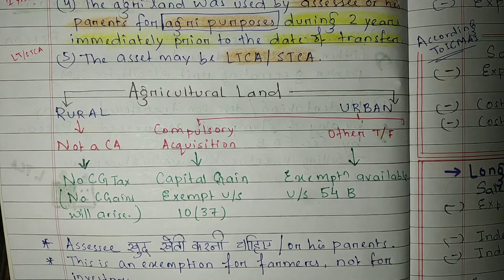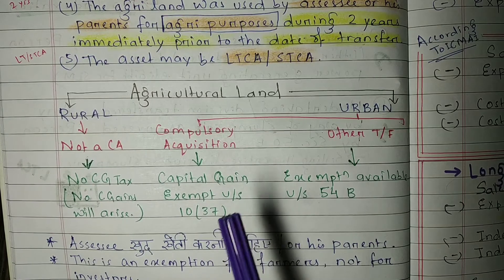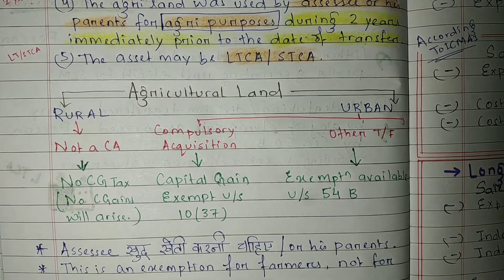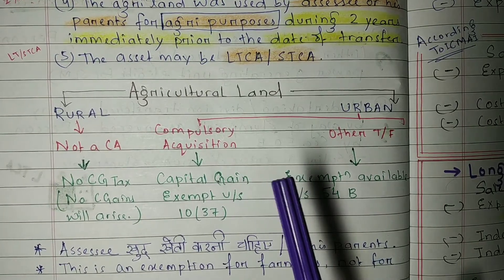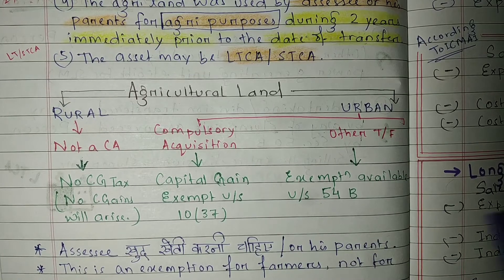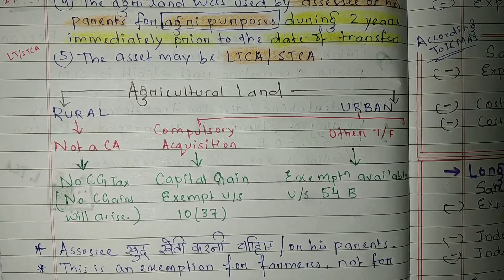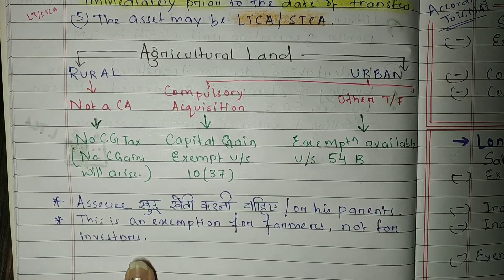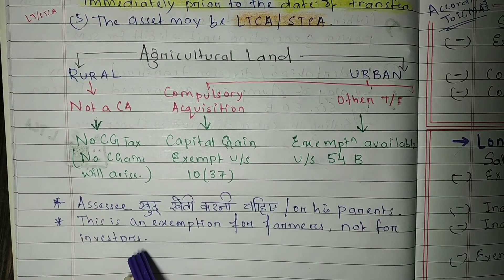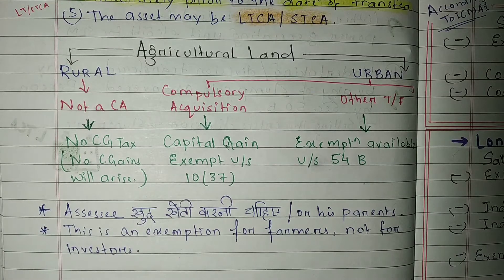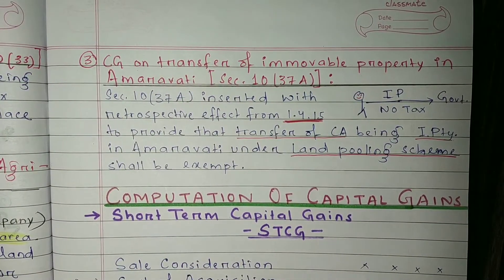If your agricultural land is situated in an urban area, and the central government or RBI compulsorily acquires it, or the consideration is approved by the central government or RBI, then the capital gain is exempt under Section 10 clause 37. If transfer happens in another way, exemption is also available under Section 54B, which we will read later. Two key points: the assessee must personally farm the land — either the assessee or their parents — and this exemption is for farmers, not for investors.